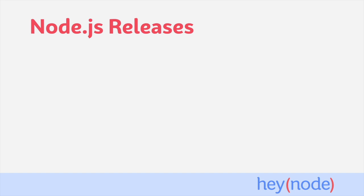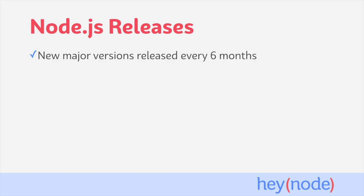Before you go to install Node.js, it's important to understand which versions you have to choose from, and how each version relates to the overall release schedule. Node.js is always getting better and always being worked on, and as a result, there's a new major version released every six months.